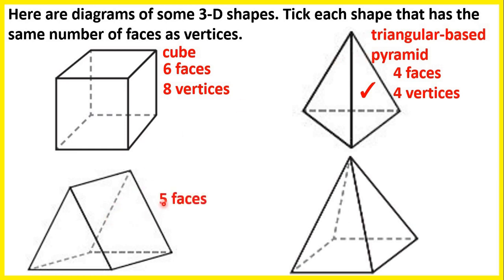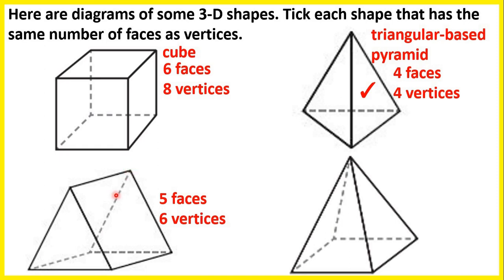Here we have 5 faces — a triangle at one end, a triangle at the other end, and 3 rectangles connecting the edges of the triangles. But we have 6 vertices — 3 at this end and 3 at the other end. So we do not have the same number of faces and vertices. This shape is called a triangular prism — a prism means we have the same 2D shape at both ends, with rectangular faces in the middle connecting them.